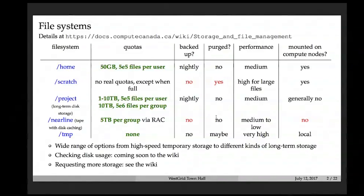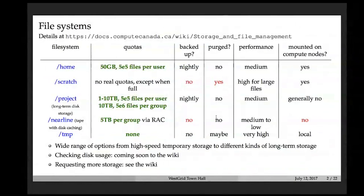Finally, there is local NVMe storage on each node — very fast, local per-node storage. Be aware that when your job is running and writing to a node, once the job stops, you must copy any important files out to your home or scratch directory, because they will not appear on the login node.